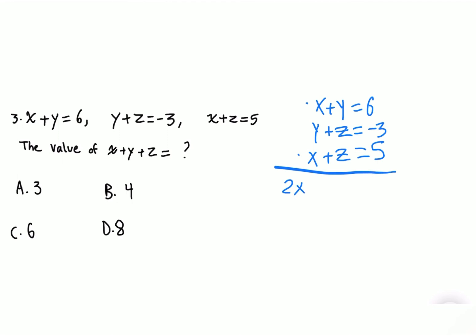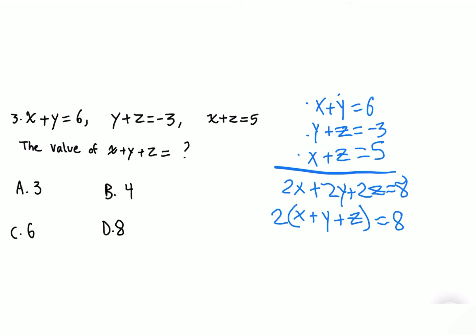Adding all three equations: we get 2x + 2y + 2z = 6 + (−3) + 5 = 8. We can factor out 2 to get 2(x + y + z) = 8. Dividing both sides by 2: x + y + z = 4. The answer is B.